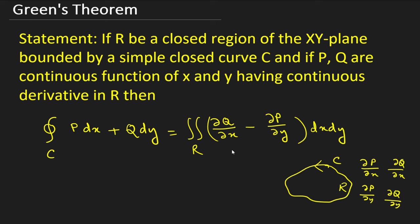Then what Green's theorem gives us: closed integration over C — because the curve is closed, we put the closed symbol on the integral. So the closed integral over C of P dx + Q dy equals the double integral over R of (∂Q/∂x − ∂P/∂y) dx dy. This is the statement.